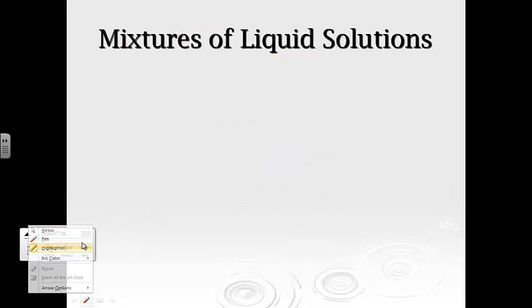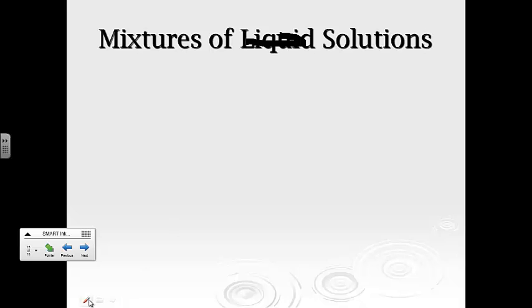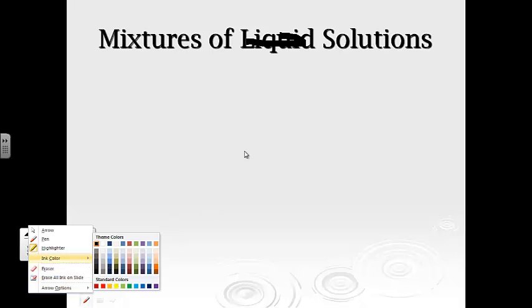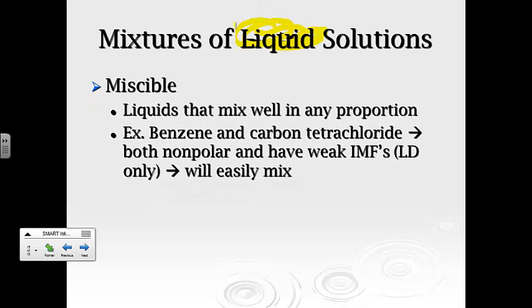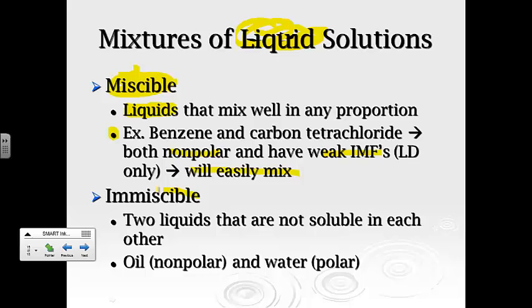Now, a couple of unique situations or terms that we refer to with liquid solutions is miscible. Same exact thing we were talking about on the last slide, except this is simply a situation that when we talk about liquids will mix well. For example, benzene and carbon tetrachloride, they're both nonpolar. They both have weak intermolecular forces, so they will easily mix. Immiscible substances are two liquids that are not soluble in each other.